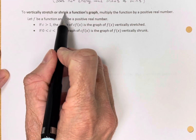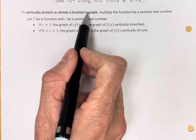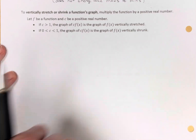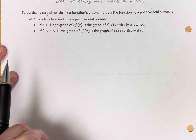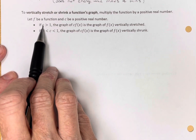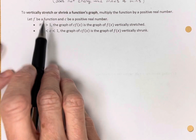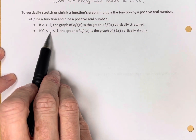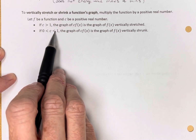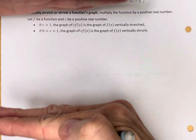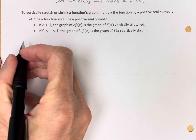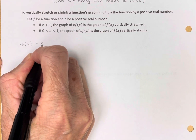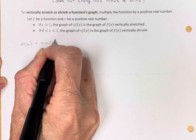To vertically stretch or shrink, we're going to multiply the entire function by a positive real number. If that positive number is greater than 1, we're going to vertically stretch. If that positive number is between 0 and 1, we're going to vertically shrink. So let's use f of x equals the sine of x.